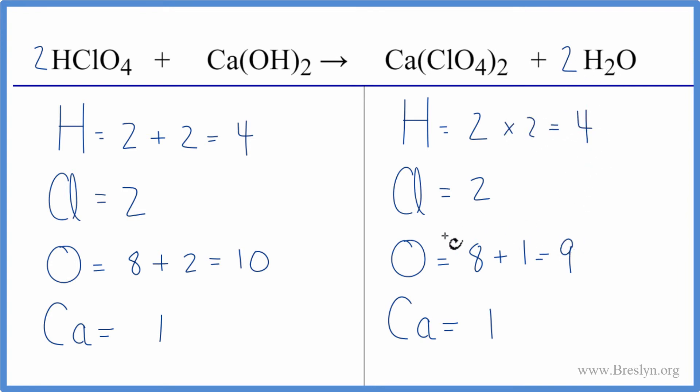Let's update the oxygens. For the oxygens, we have two times four, that's our eight, plus one times the two. That gives us ten, and now this equation is balanced.